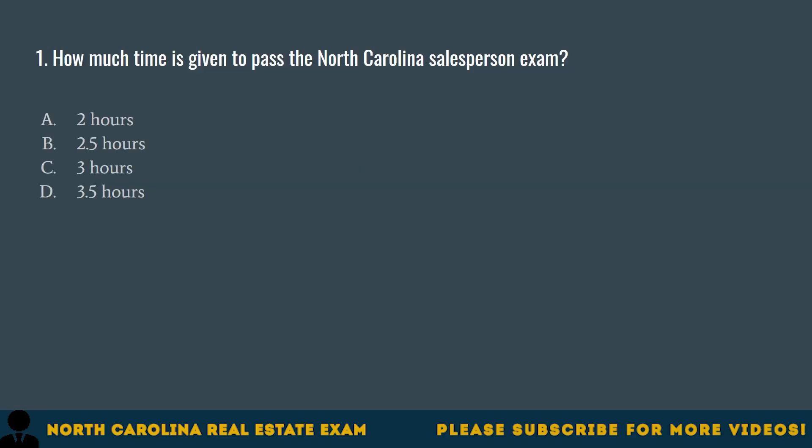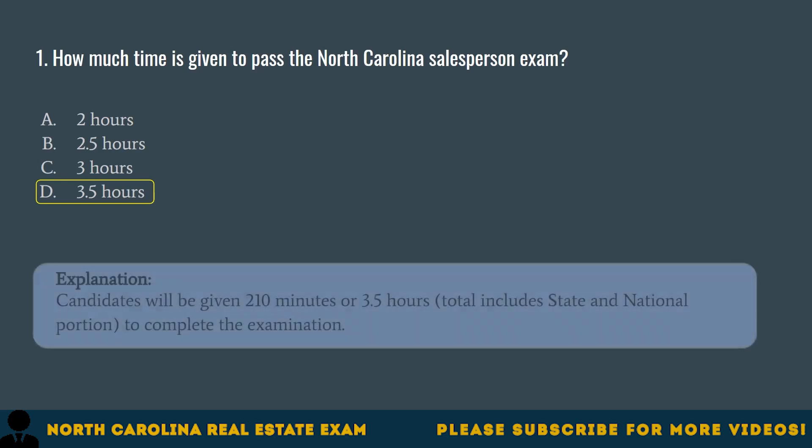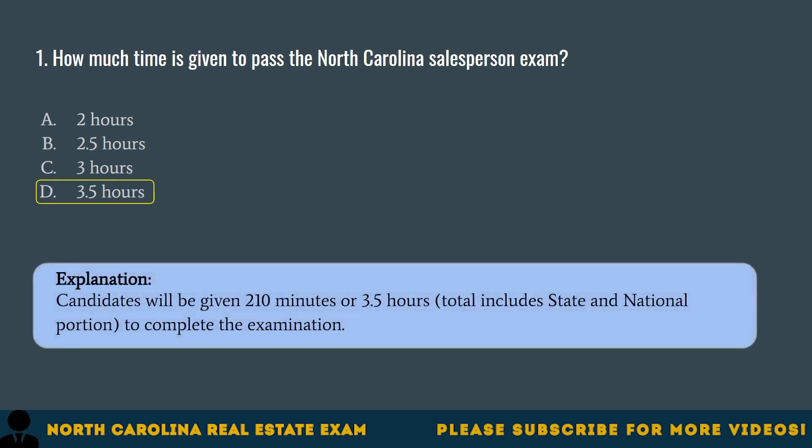Question 1. How much time is given to pass the North Carolina Salesperson Exam? A. 2 hours. B. 2.5 hours. C. 3 hours. D. 3.5 hours. The correct answer is D. 3.5 hours. Candidates will be given 210 minutes or 3.5 hours total, which includes the state and national portion, to complete the examination.